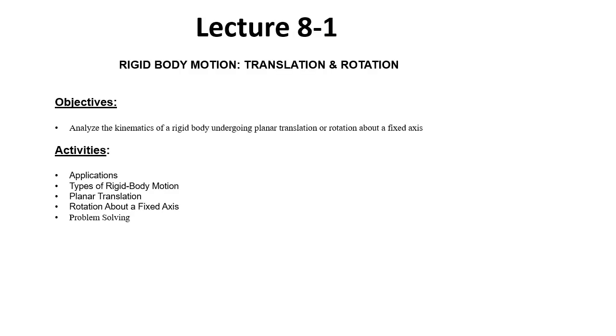Next, we're going to take a look at Lecture 8.1 for this module here, where we're going to look at rigid body motion, translation, and rotation. We're going to analyze the kinematics of rigid body undergoing planar translation or rotation about a fixed axis. So within this section, we're going to go through a couple different applications, review the types of rigid body motion, planar translation, talk about rotation when it's a fixed axis, and then go through a couple of problems by hand with my solution.